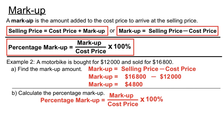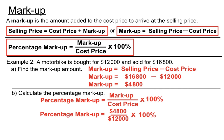To calculate the percentage markup, we put the markup amount of $4,800 over the cost price of $12,000 and multiply by a hundred percent. The markup is found to be forty percent. That sounds like a lot, but markups from shops can be quite large — otherwise the shopkeeper might go out of business. That's capitalism.